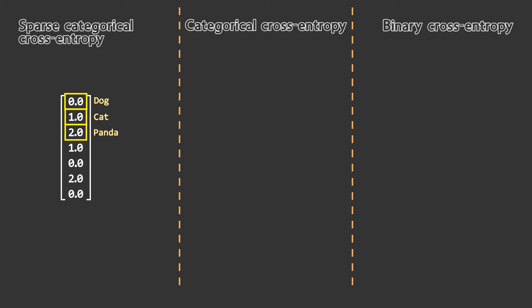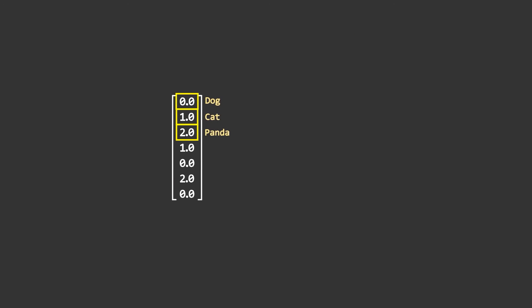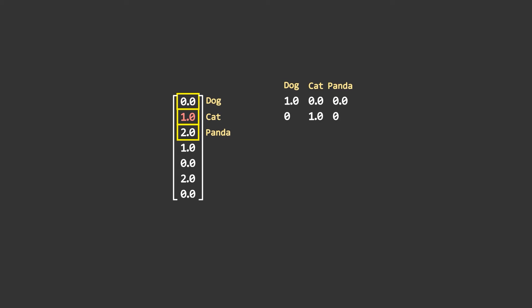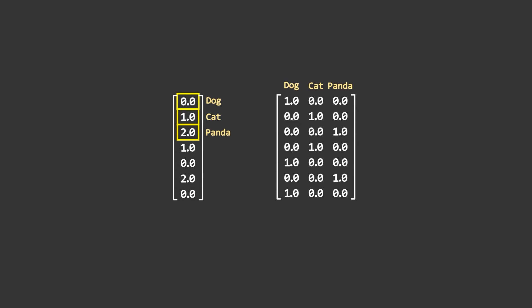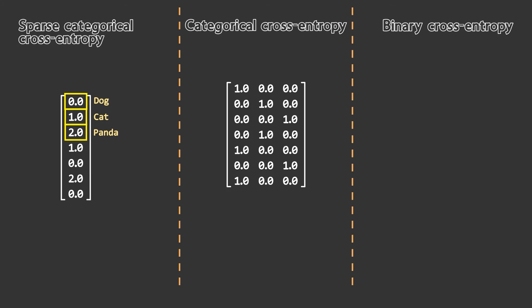If you one-hot encode this integer array, you will use categorical cross-entropy instead. To one-hot encode: take the same array and write each class in a column-wise fashion. For the first row, which is a dog, write 1 in the dog column and 0 in the rest. The second row is a cat, so write 1 in the cat column and 0 in the rest. Do this for all rows. The resulting matrix is one-hot encoded, and if you have this type of data you use categorical cross-entropy.